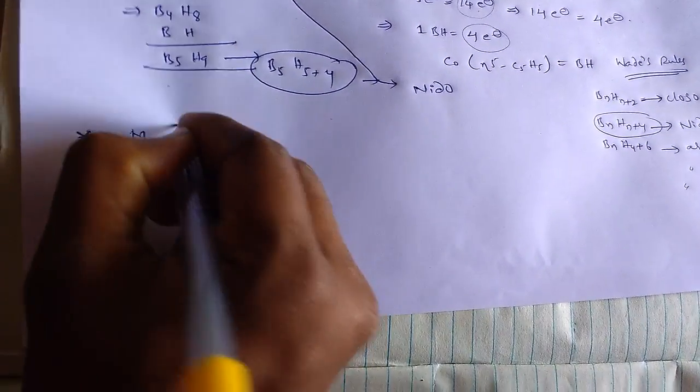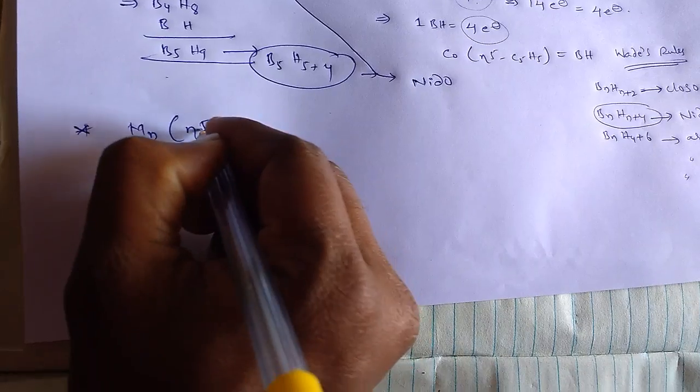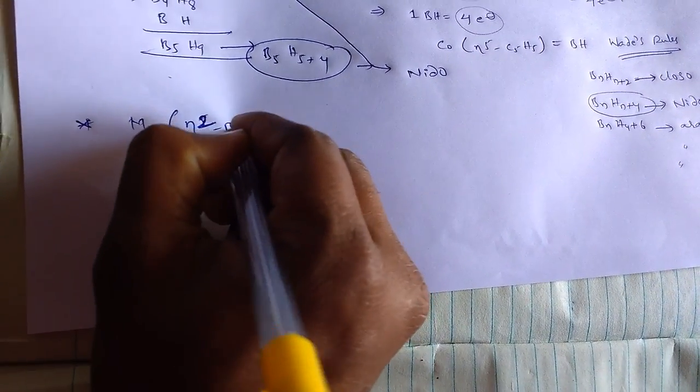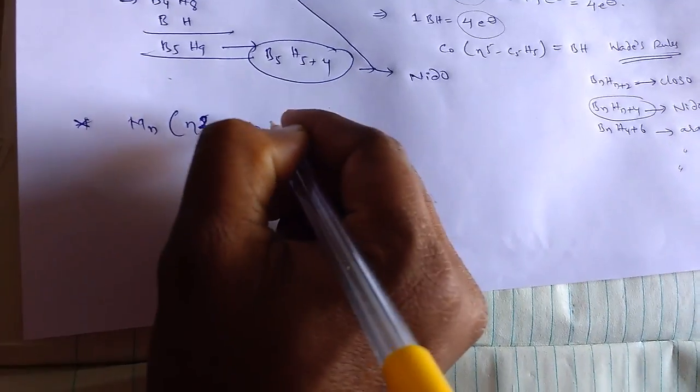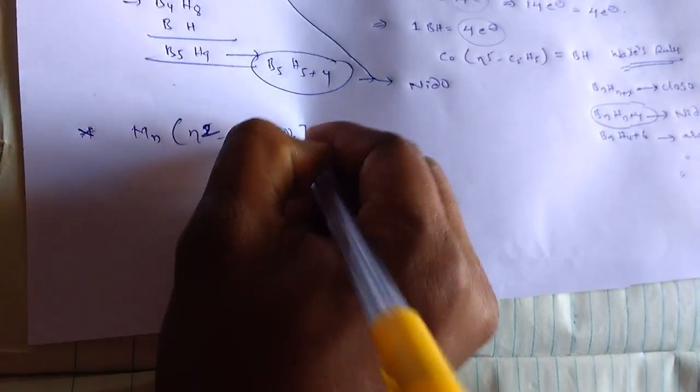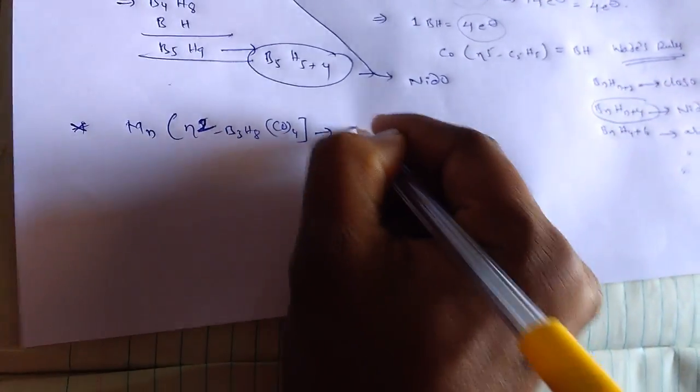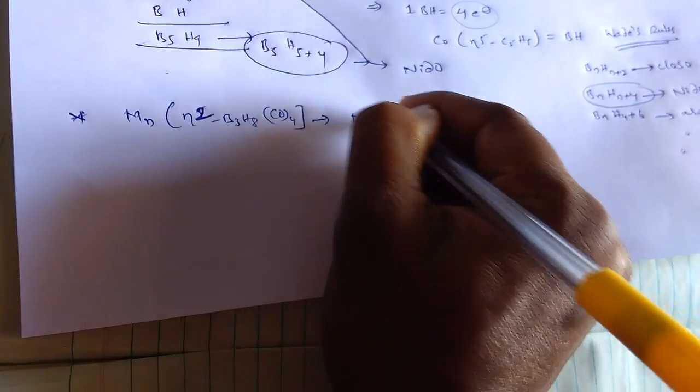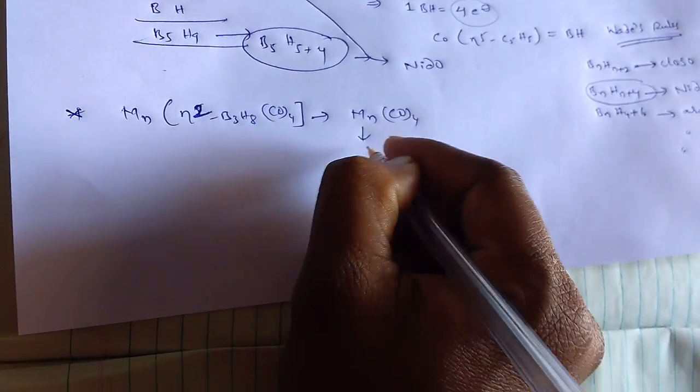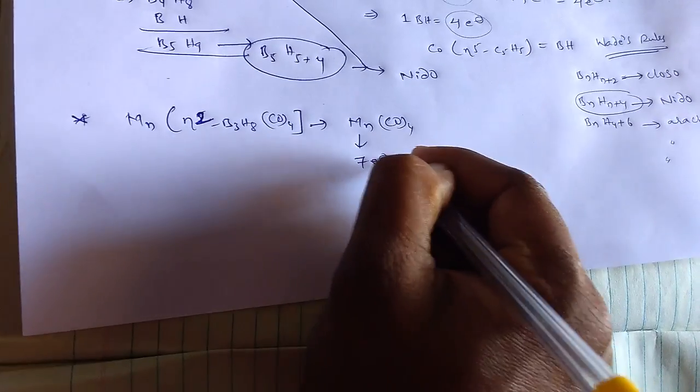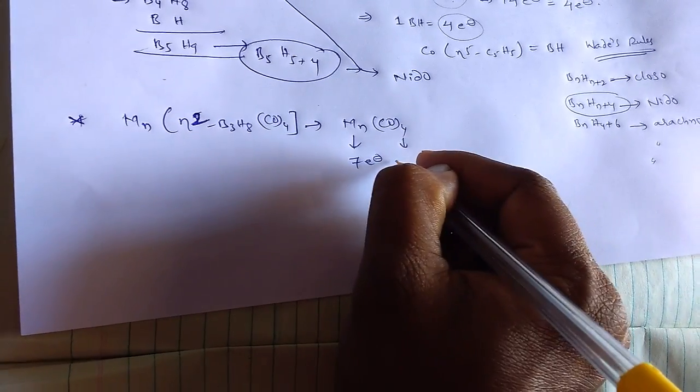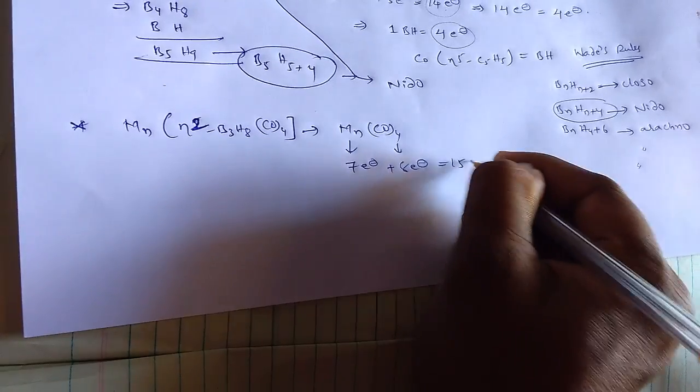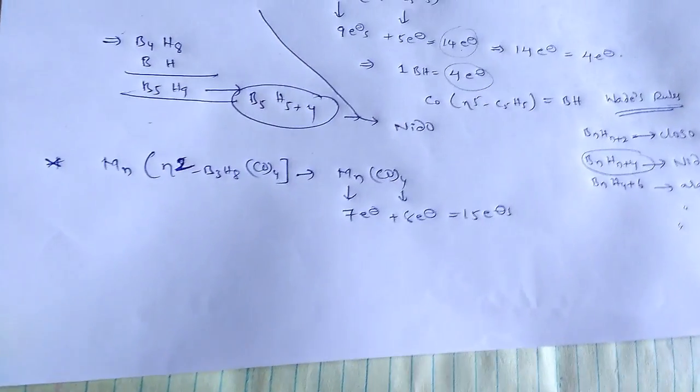Next, manganese complex, if we take eta two not five, eta two here B3H8 CO4. So in this manganese complex, MnCO4, manganese has 7 valence electrons. From the CO, we will get 8 valence electrons. Totally, 15 electrons, 15 valence electrons.